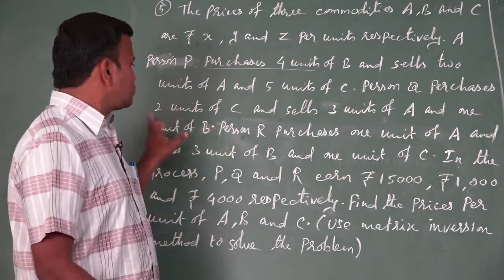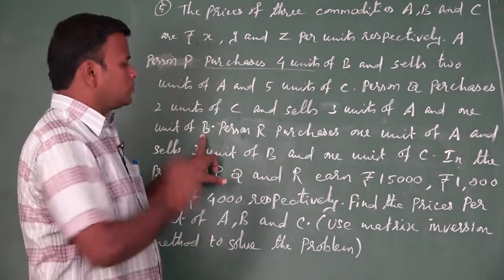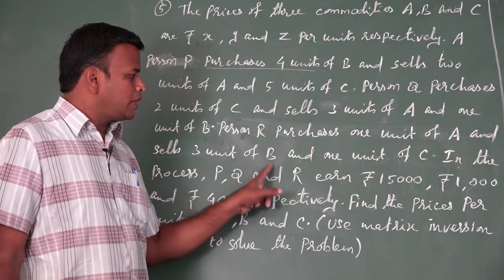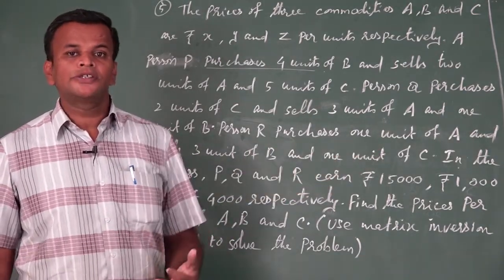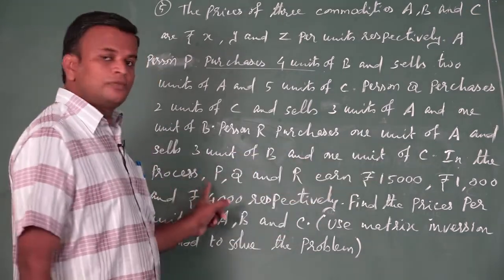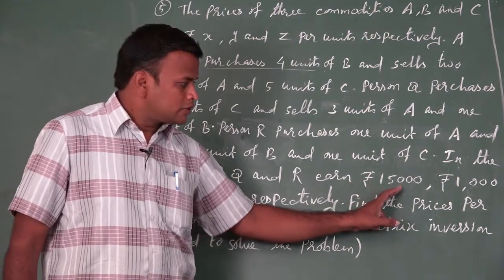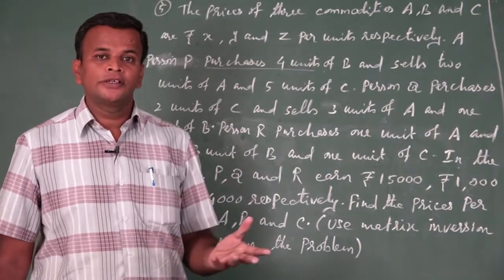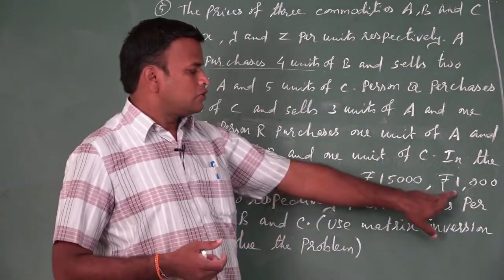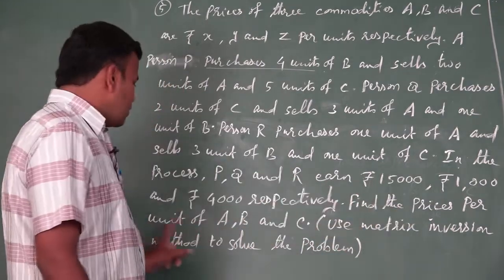A person Q buys 2 units of C and sells 3 units of A and 1 unit of B. And person R purchases 1 unit of A and sells 3 units of B and 1 unit of C. So there are 3 persons - P, Q, and R - and all 3 persons purchase 1 item and sell 2 items. Find the prices per unit of A, B and C.